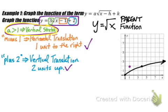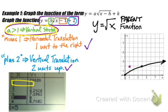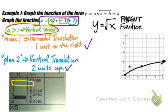Looking at my table on the TI-84, the point (1, 2) is my starting point because anything less than x equals 1 gives an error. I can then grab other points: (2, 5) and (5, 8). Plotting those in the coordinate plane — notice how there is a vertical stretch, shifted over one unit and up two units, just like we said.